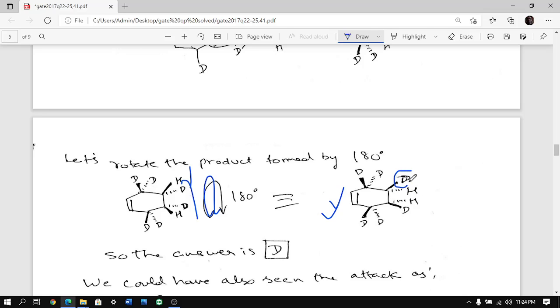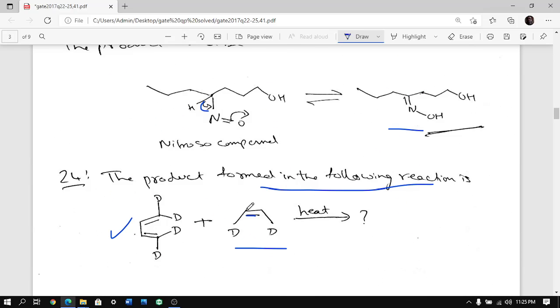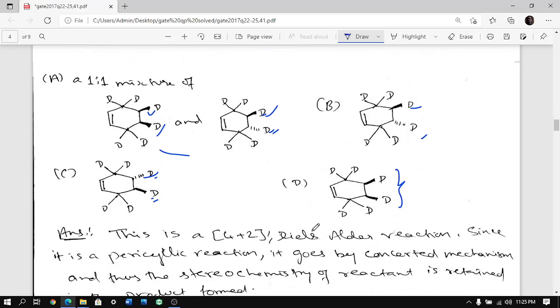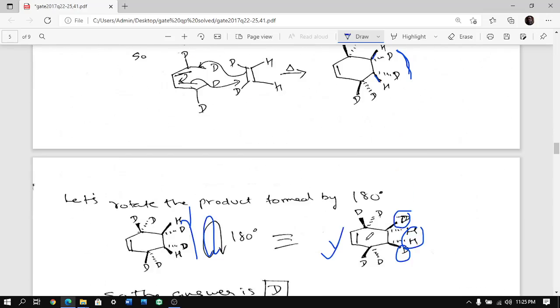So basically you are getting cis addition. Both deuterium has to be on the same face. You get cis addition of both deuterium and both hydrogen because the starting material was cis, very important. If the starting material would have been trans then you would have got trans in the product also. But starting material was cis, both deuterium on the same face.